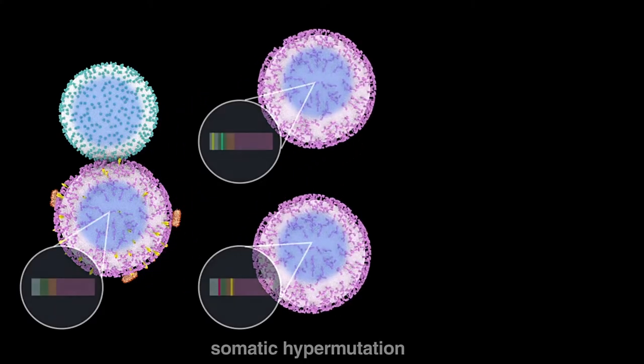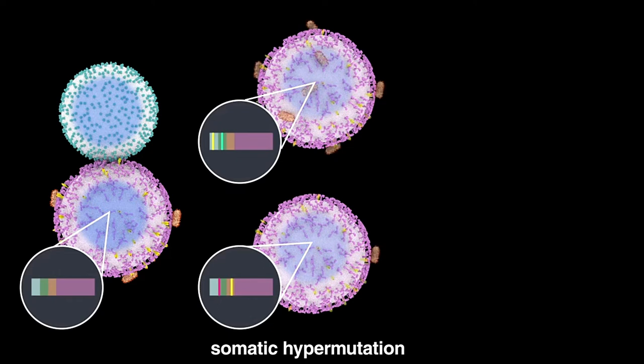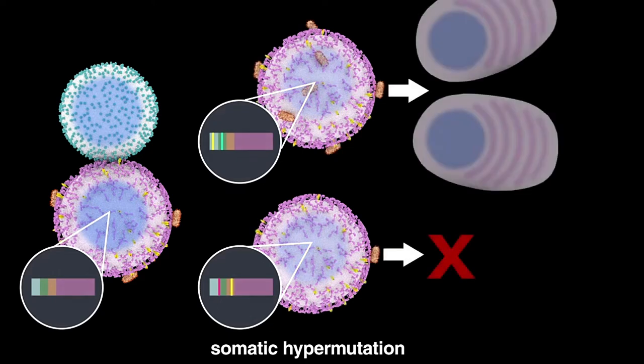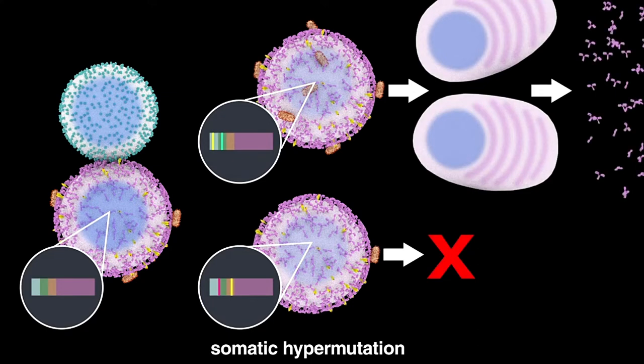Upon antigen binding, B cells can be induced to produce additional antibody variation through a process called somatic hypermutation where the DNA sequences that code for the antibodies' variable regions can rapidly mutate. Antibodies with higher affinity cause further B cell activation which results in the selection and production of highly specific antibodies to the antigen in question.